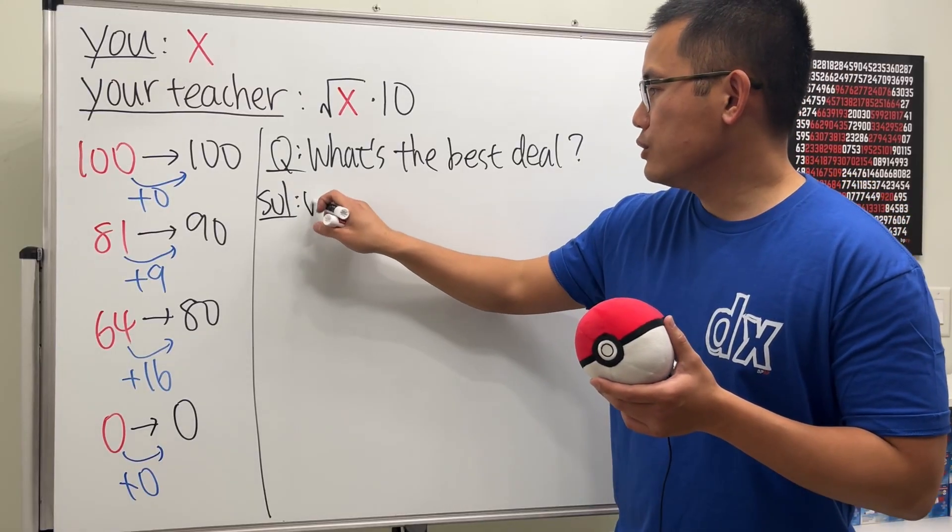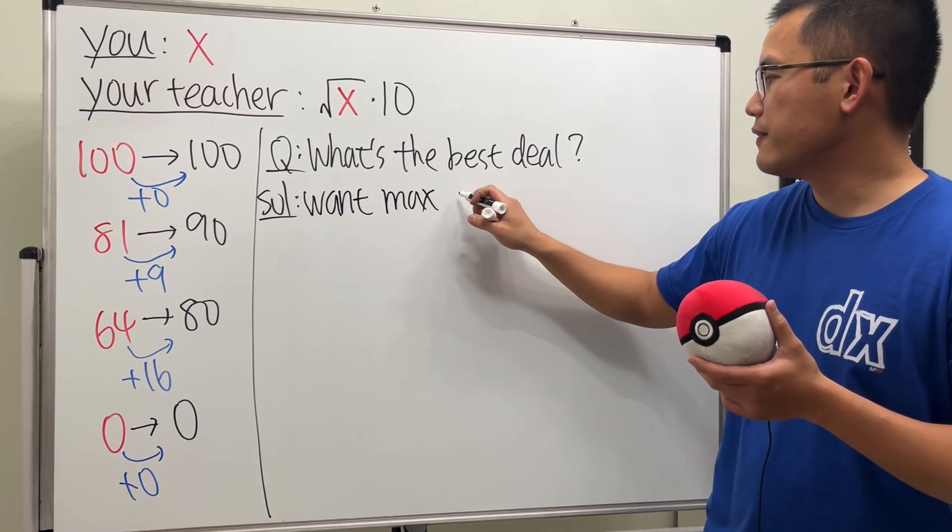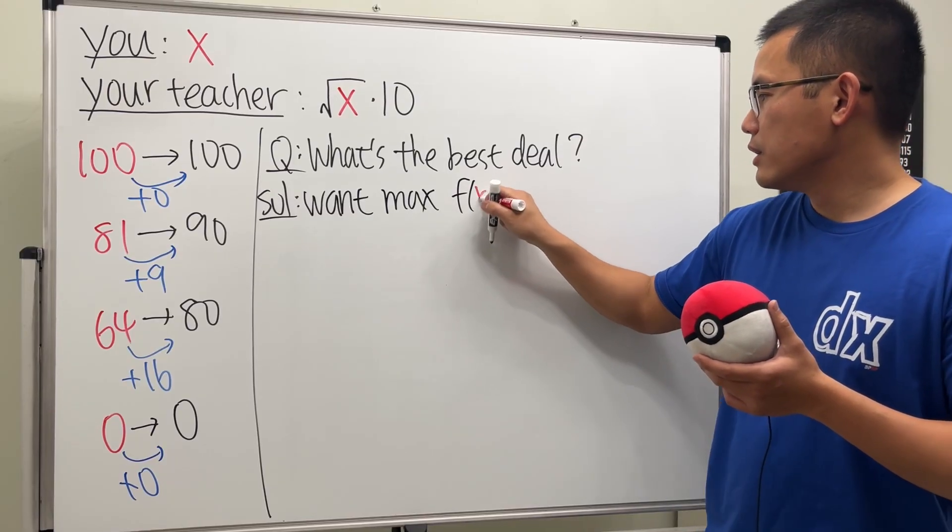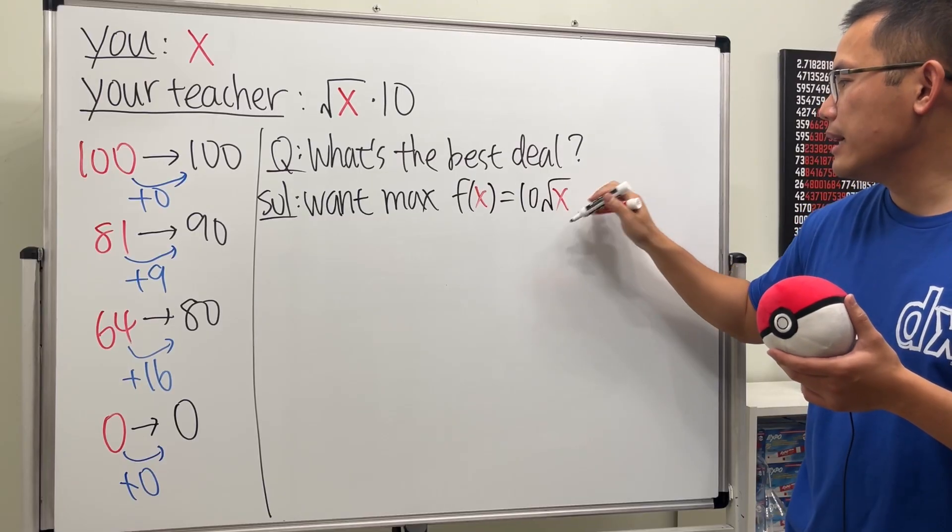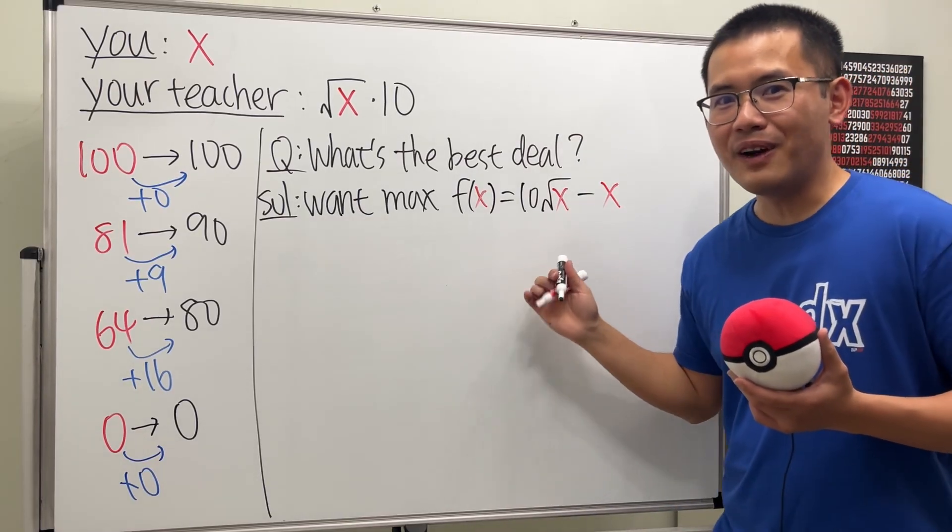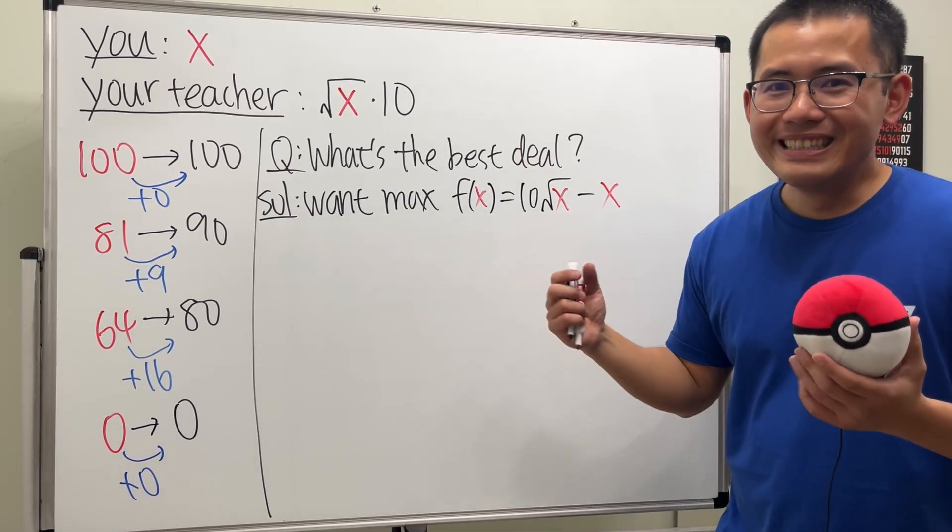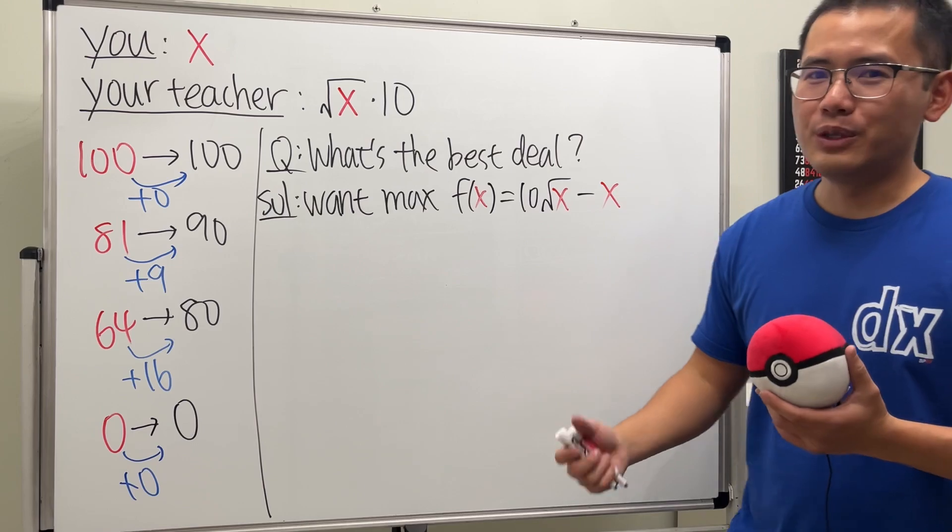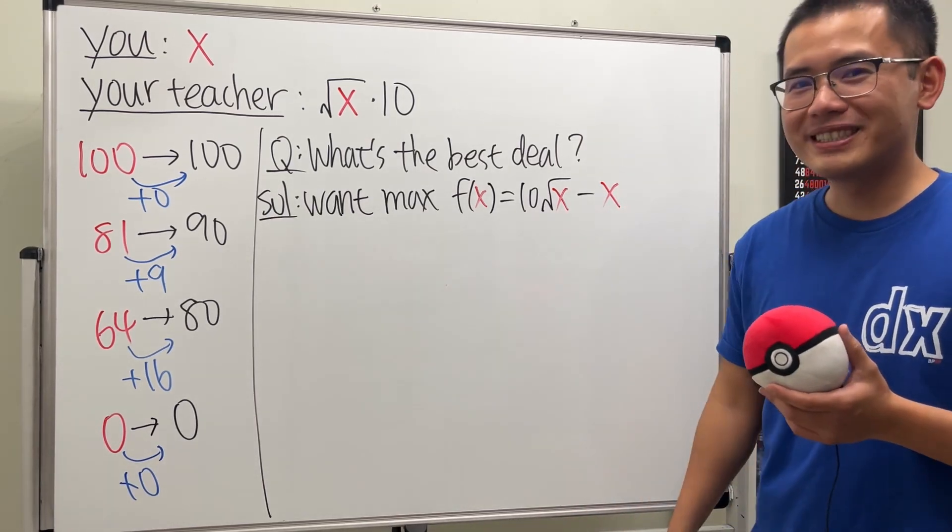So the solution, or the approach is just that we want the maximum, and let's define the function f of x to be that which is just 10 times the square root of x, and then minus the original. We want to find the maximum of this function. Calculus 1, min max question. And this right here is like how you can use calculus in real life. For your exam scores.